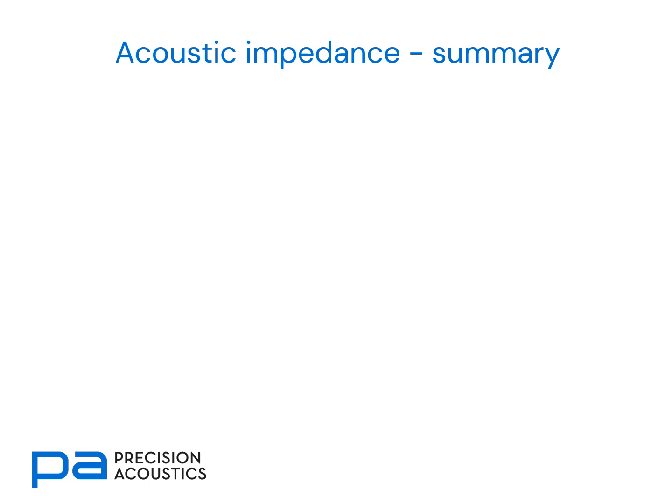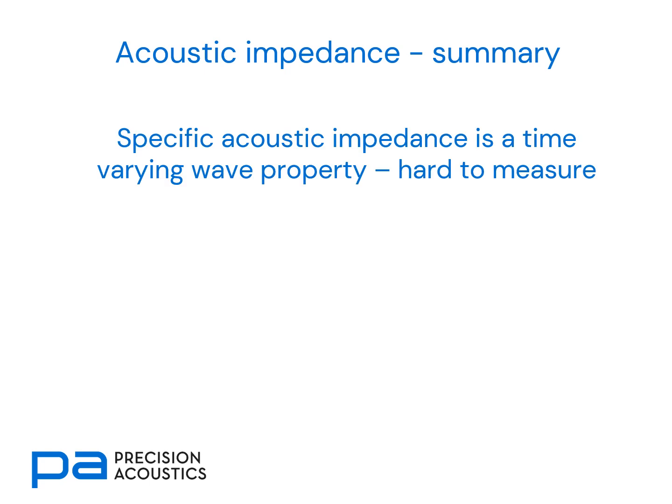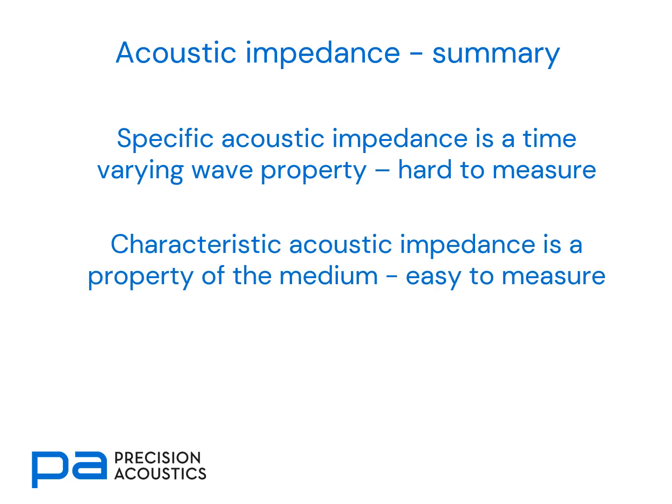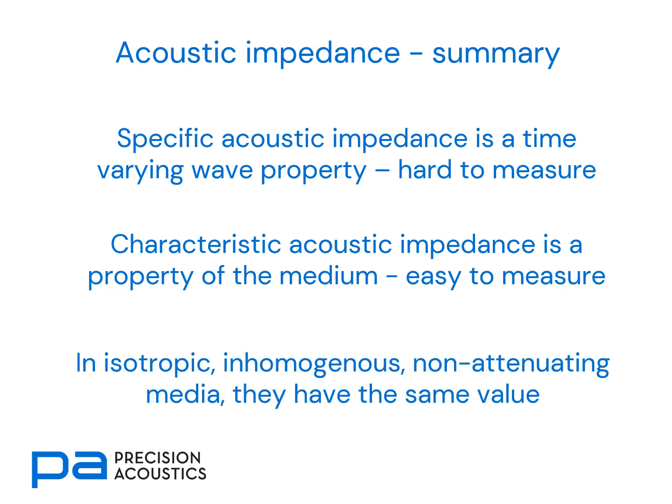In summary: specific acoustic impedance is a time-varying wave property, but due to the problems associated with determining particle velocity, it is hard to measure. Characteristic acoustic impedance is a property of the medium and is easy to measure. In isotropic, homogeneous, non-attenuating media they have the same value. Therefore, in many situations where we might require specific acoustic impedance, it is actually of greater practicality to use characteristic acoustic impedance under those assumptions.